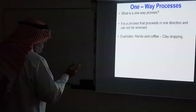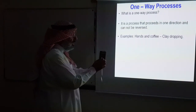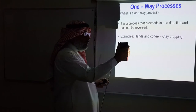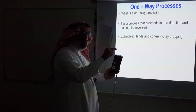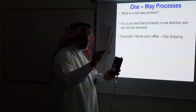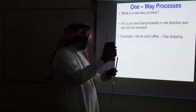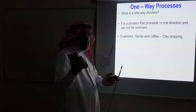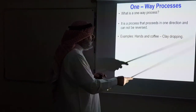For example, if you take a cup of hot coffee and touch it with your hand, heat will always go from the coffee to your hand. That's a one-way process. It never happens that heat leaves your hand to the coffee, making your hand colder when touching a hot cup.